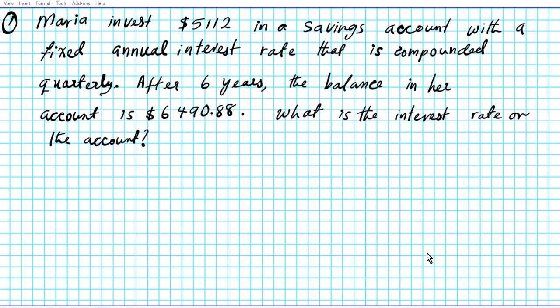Now let's consider the following problem. Maria invests $5,112 in a savings account with a fixed annual interest rate that is compounded quarterly. After six years the balance in her account is $6,490.88. The question is: what is the interest rate on the account?